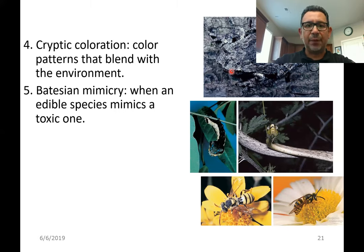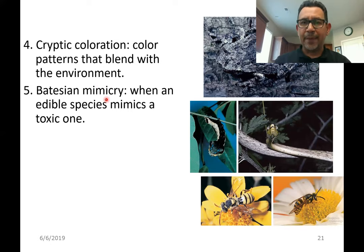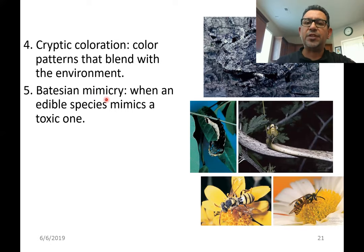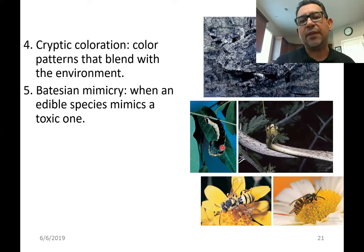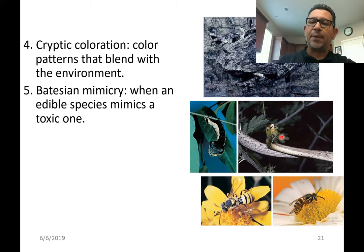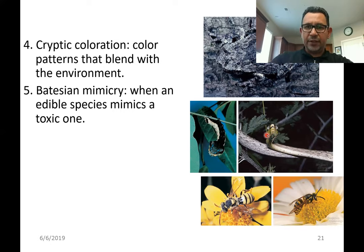Another strategy is known as Batesian mimicry, where mimicry means to imitate. A prey species that could actually be easy to catch and make a good meal is avoided by the predator because it is confused with something that could be dangerous. For example, this caterpillar — the head is at one end, but the abdomen can be extended in the presence of a threat to look like the head of a snake. A bird may see this display, think it's a snake, and fly away from what could have been a good meal.